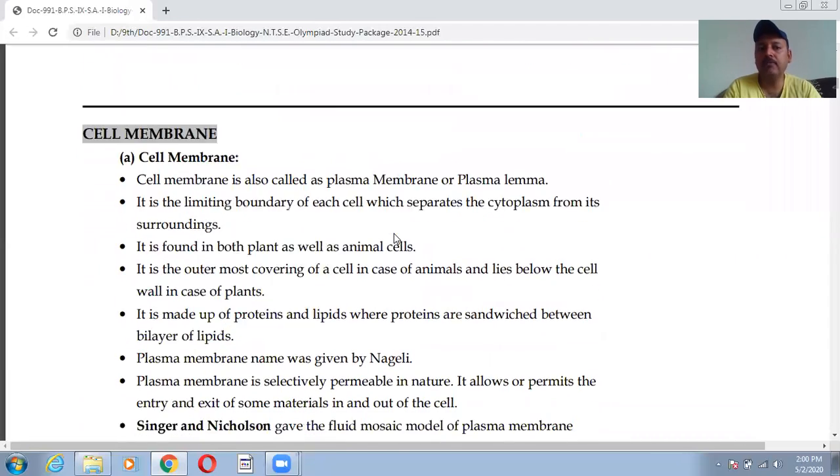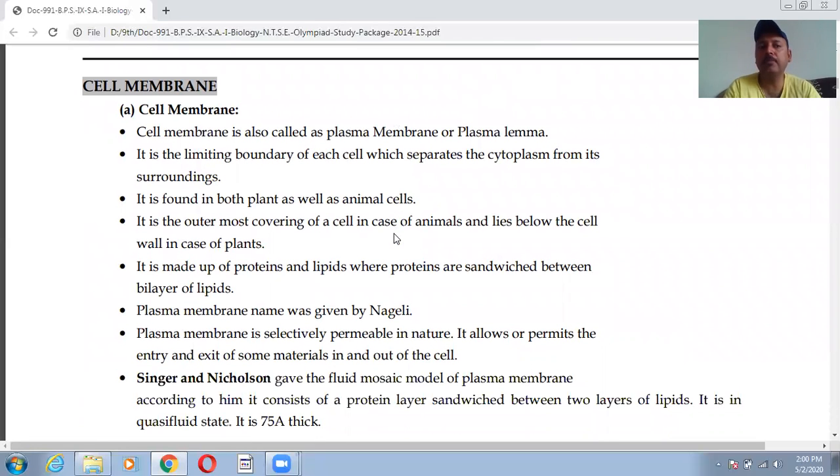Next we have the basic component that is cell membrane. Cell membrane is also called as plasma membrane or plasmalemma. Keep in mind this is the other name, plasmalemma. And it is the limiting boundary of each cell which separates the cytoplasm from its surroundings. Cytoplasm is the jelly-like substance in which all the cell organelles are present and it separates the cytoplasm from the environment, from the surroundings. And it is present in both plant and animal cell.